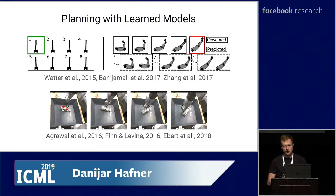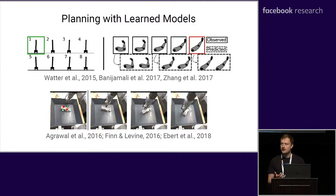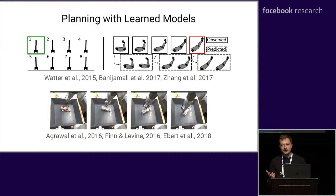Planning has been very successful when the rules of the environment are known, for example in AlphaGo. But to plan in unknown environments, the agent must learn a world model from experience over time. The embed to control line of work attempted this and was able to solve simple visual control tasks like controlling a pendulum or a two-linked robotic arm. Moreover, planning from pixels is of high interest to the robotics community where robots should interact with unknown objects in the scene.